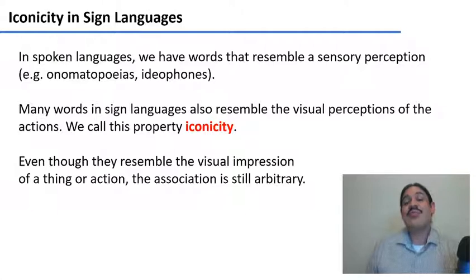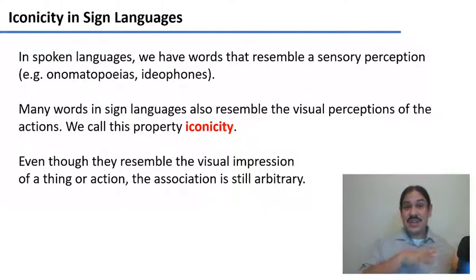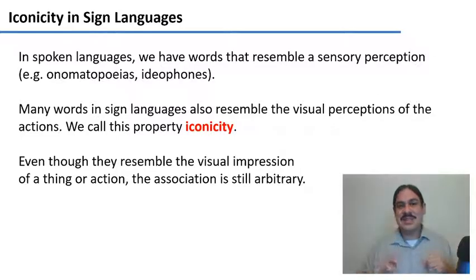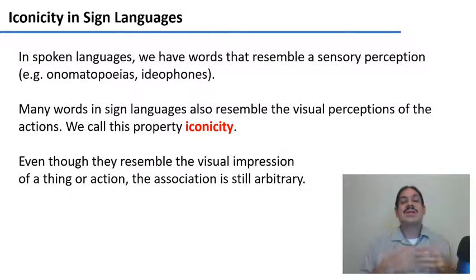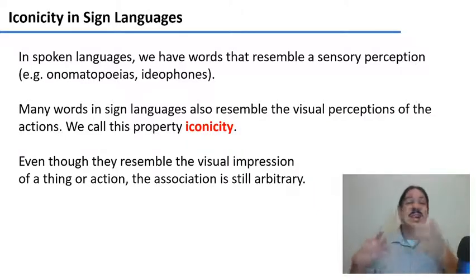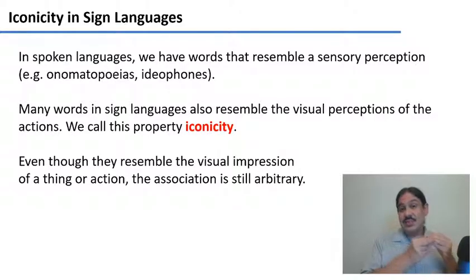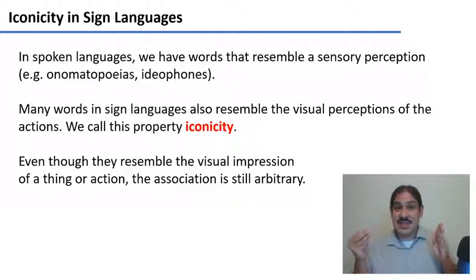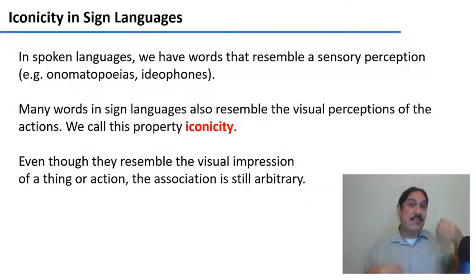There's some resemblance, but there's still a lot of arbitrariness going on. In spoken languages we have words that resemble the sensory perception of an action or thing — for example, onomatopoeias resemble the sounds of nature, and ideophones resemble the sensory perception of something. For example, 'kira kira' in Japanese means twinkling. Sign languages have these kinds of words as well, and in general, words in sign languages may resemble some perception of an action or thing. We call this property iconicity.